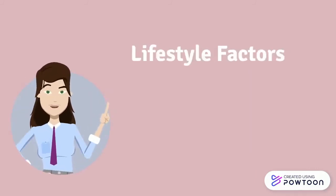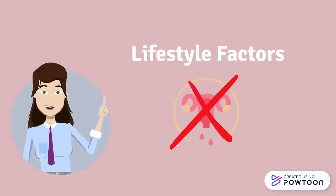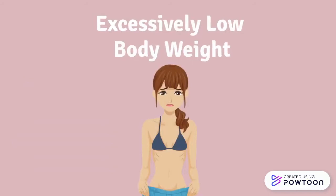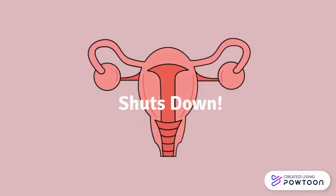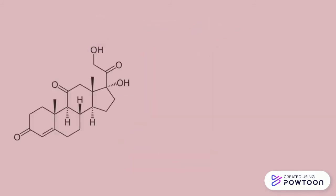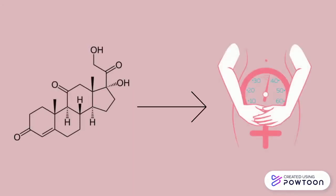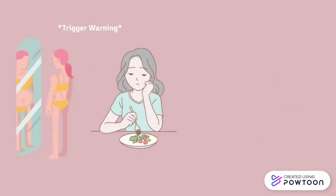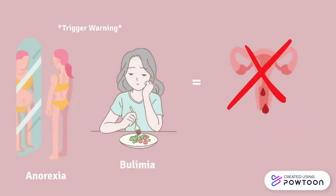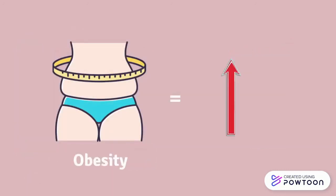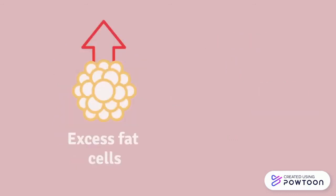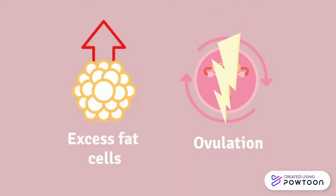Having an excessively low body weight can be dangerous. It signals to your body that you cannot sustain a pregnancy, so your body shuts down your malnourished reproductive system. This can interrupt many essential hormonal functions crucial to maintaining a menstrual cycle. Individuals with eating disorders such as anorexia or bulimia often stop having periods because of abnormal hormonal changes. Obesity is often accompanied by high levels of specific hormones, which can affect the menstrual cycle, and excess fat cells can also interfere with the process of ovulation — all causing amenorrhea.